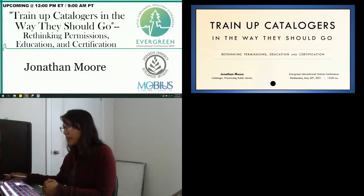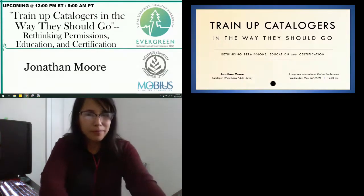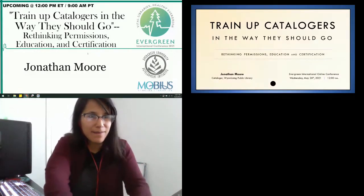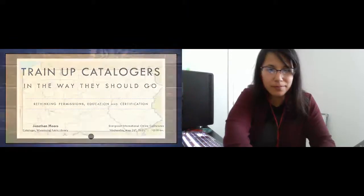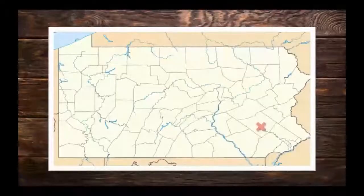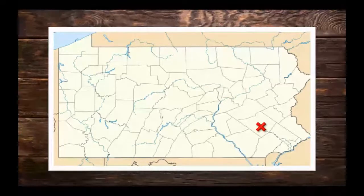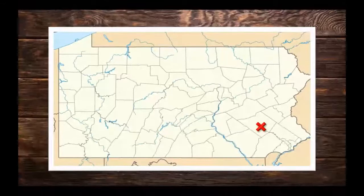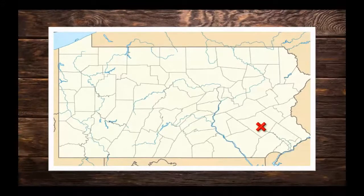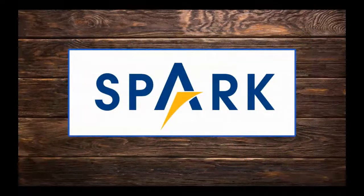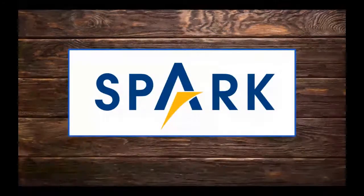All righty. Well, hello everyone. Thank you for coming. It is really an honor for me to be here. My name is Jonathan Moore. I'm the cataloger at Wyomissing Public Library, a small public library in southeastern Pennsylvania, just outside of the city of Reading. And more to the point of what I will be speaking with you about today, I also serve as chair of the cataloging committee for SPARC, Pennsylvania's statewide Evergreen consortium.